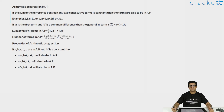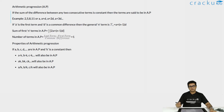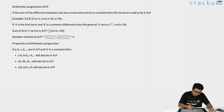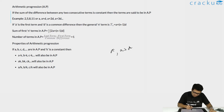Arithmetic progression is nothing but a series of numbers where the difference between two consecutive terms is equal. The difference between the first and second term is equal to the difference between the third and fourth term, or the fourth and fifth term. We generally represent an arithmetic progression as: if a is the first term, a plus d is the second term, a plus 2d is the third term, and so on.